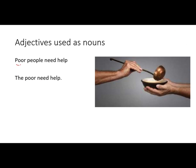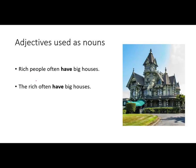Sometimes we take an adjective and use it as a noun. For example: 'Poor people need help' — 'The poor need help.' The expression 'the poor' just means poor people in general, and it's plural, so it'd be 'need,' not 'needs' with an S. Another example: 'Rich people often have big houses' — 'The rich often have big houses.' The second sentence, 'the rich,' means the rich people, and that expression is plural.